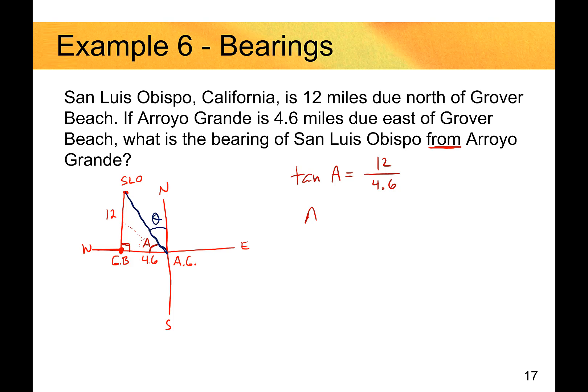We're going to take the inverse of that. You can pause the video here if you need to. Let's go on here. As I punch this into my calculator to the nearest degree, tangent inverse of 12 over 4.6 gives me 69 degrees.